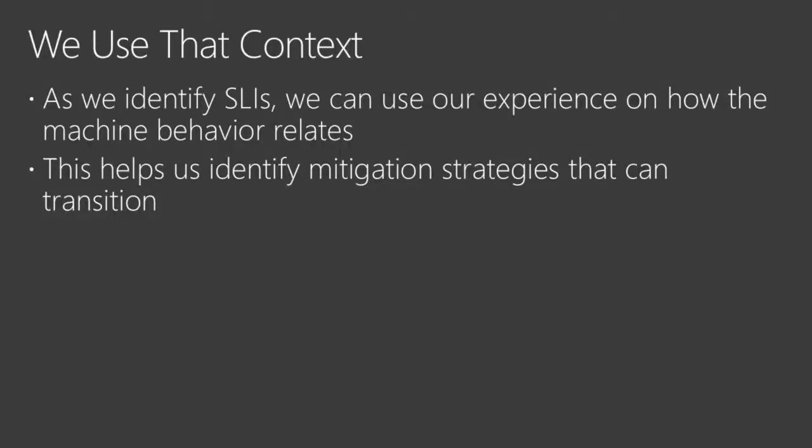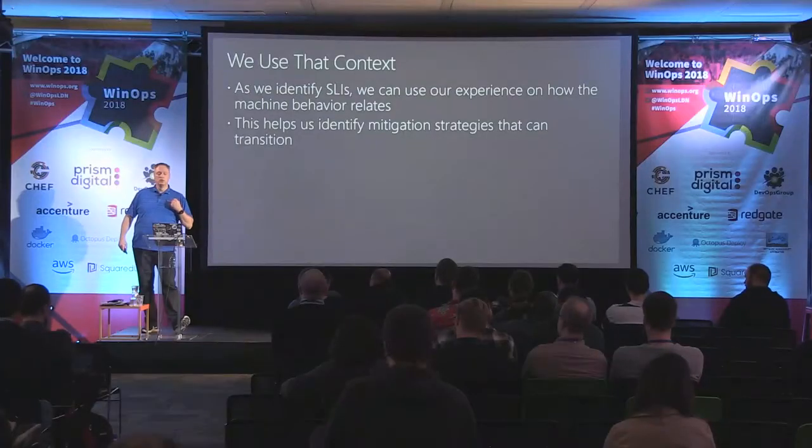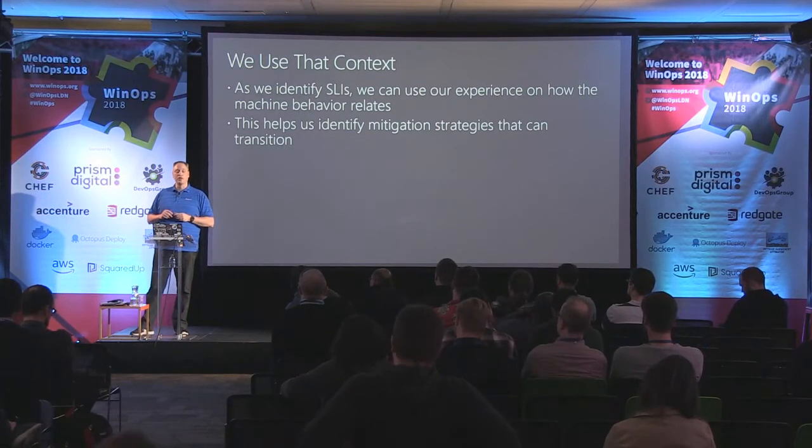As we identify the different metrics and the service-level indicators that we want to use, we can use that experience we've built up — that context — to help us. Understanding where we see these behavior states come from helps us then identify potential remediation steps for when we fall out of tolerance in our service-level indicators and objectives. Being able to tie those things together then puts us in a place where, when we run in an environment like a PaaS service or in a container in a cloud where we can't really see what's happening on the hardware, we're in a much better place to effectively operate our software.